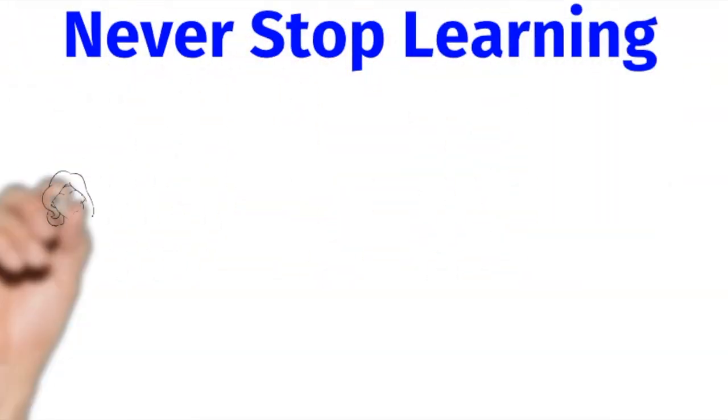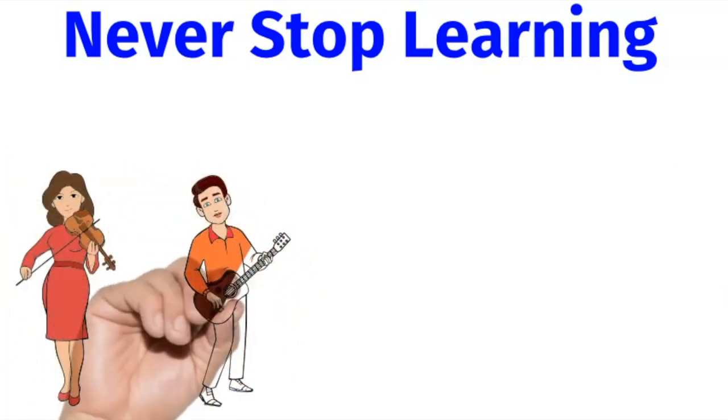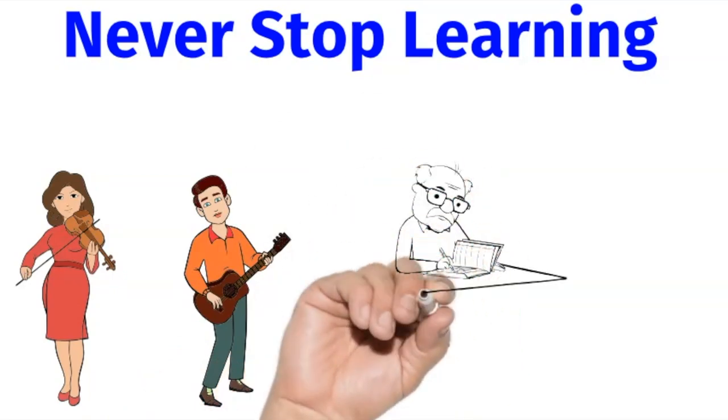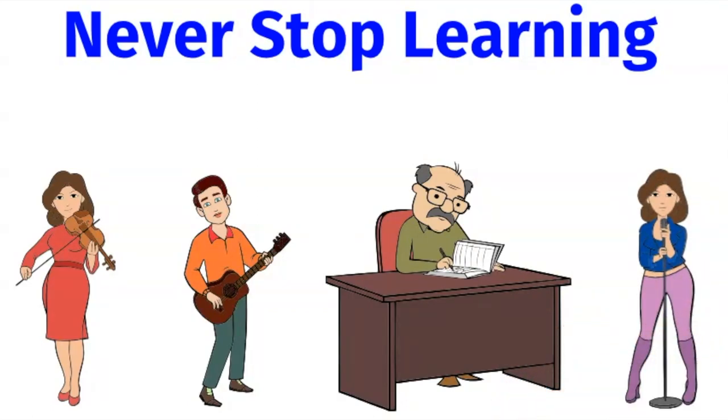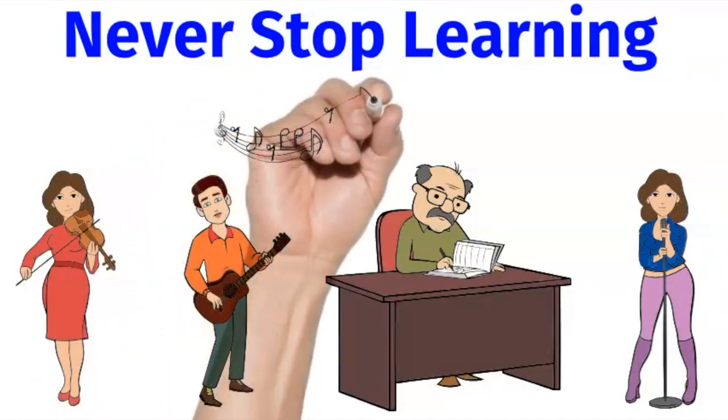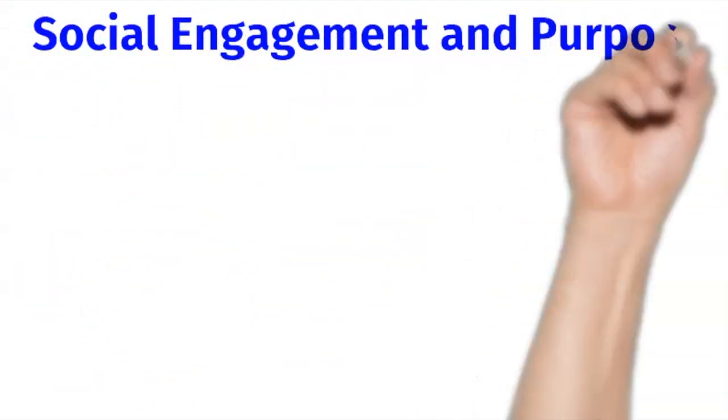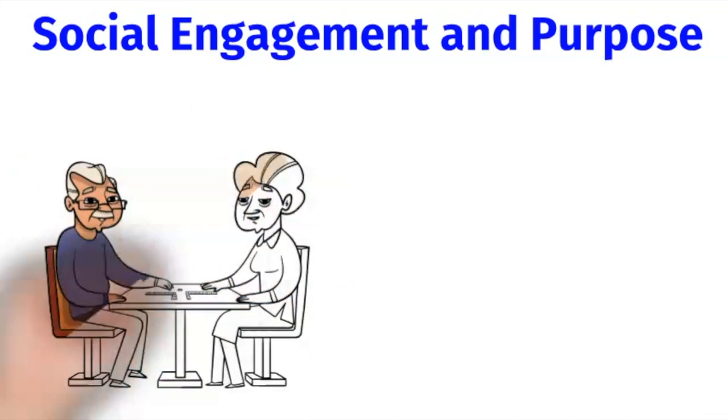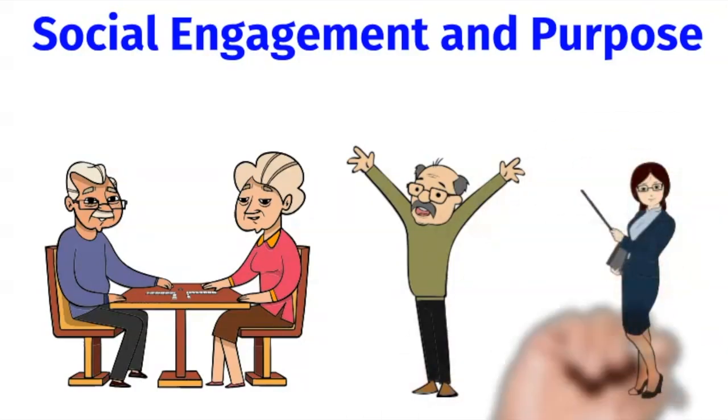Another way to keep your brain sharp as you get older is to never stop learning. For example, you could learn to play a musical instrument. A study was done on twins, and they found that the twin with musical knowledge in older adulthood was 36% less likely to develop dementia. Even listening to music stimulates deep neural connections in your brain. You could also read books or do puzzles to keep your brain active. Social engagement and having a purpose and passion later in life can help to keep your brain sharp and help you to live a longer and healthier life.